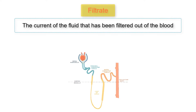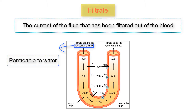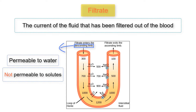Recall that the proximal convoluted tubule and the distal convoluted tubule are connected by the loop of Henle. The loop of Henle consists of the descending limb and the ascending limb. This is the site where water is reabsorbed in the countercurrent multiplier. The descending limb is permeable to water, meaning water can flow through the wall of the descending limb and into the interstitial fluid of the cells of the kidneys. The descending limb is not permeable to solutes, meaning nothing but water can flow out of it.